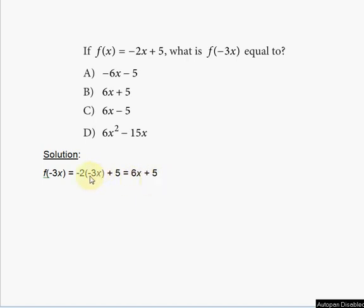6x + 5, because -2 times -3 is 6 positive. So answer choice B is the correct answer for this problem.